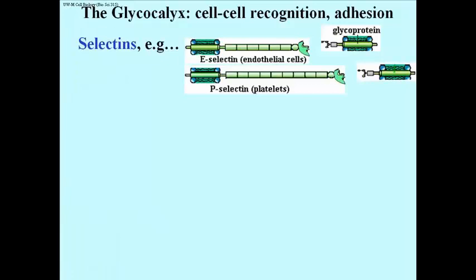Let's look at the glycocalyx itself. Cells recognize each other by the structure of their ECM and also by several cell-cell recognition or adhesion molecules — proteins or glycoproteins embedded in the membrane, that is proteins that are part of the glycocalyx.